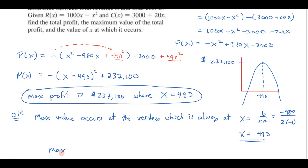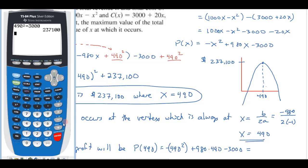and then the maximum profit will be P(490). All I have to do is plug 490 into the profit function. So whatever -490² is, now of course I have to square the 490 and then make it minus, so let me put that in parenthesis like that, plus 980 times 490 minus 3000, and I'll bet it ends up being 237,100. Let's just double check that.